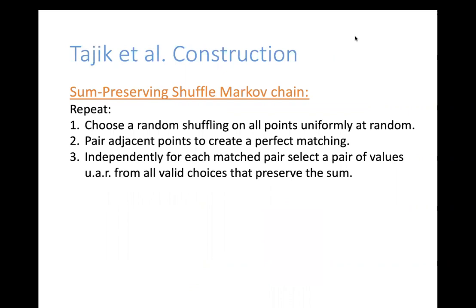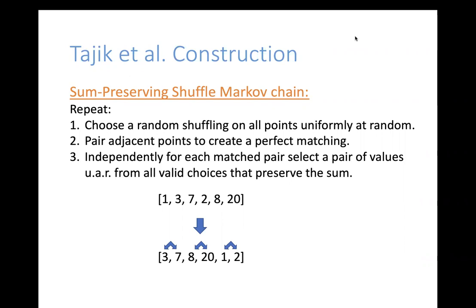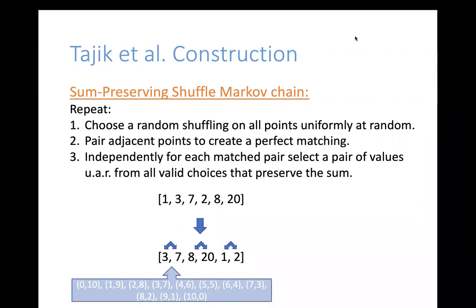Tajik et al. present an encryption scheme starting from a vector of integers. First, you shuffle the vector uniformly at random. Then you pair adjacent points to create a perfect matching. Independently, for each pair in the matching, you replace it uniformly at random with one of the valid pairs of integers — all pairs with the same sum that respect the component bound. If you repeat this algorithm enough times, you'll end up with a sum-preserving encryption scheme.